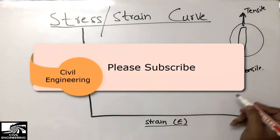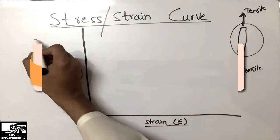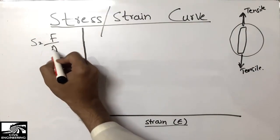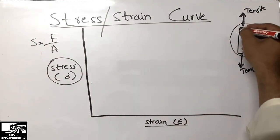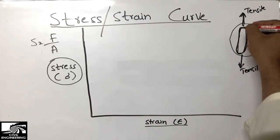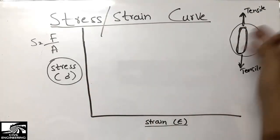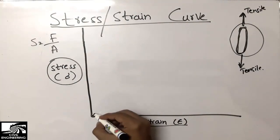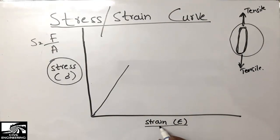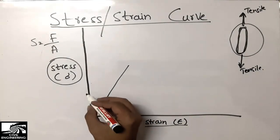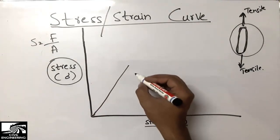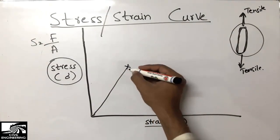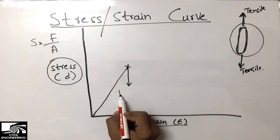Stress is defined as force per unit area — the force acting on the cross-sectional area of the steel bar. When the stress is increased on this object, it increases in a linear behavior, and similarly the strain also increases in the same way, up to the point we call the proportional limit.